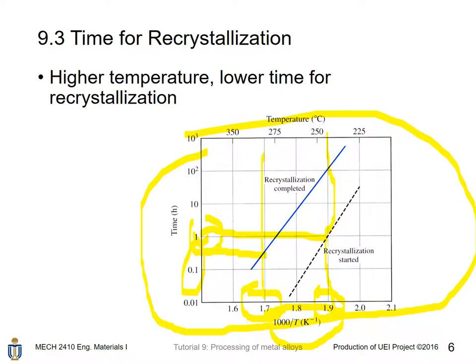For a higher temperature, there is a lower time requirement for recrystallization. The graph shows 1000 over temperature on the axis, so higher temperature is on one side. The recrystallization completion time is generally less for temperatures higher than the original point.